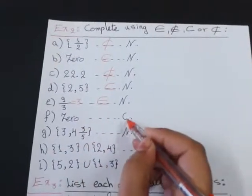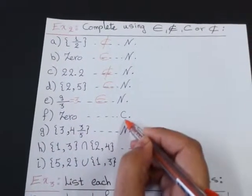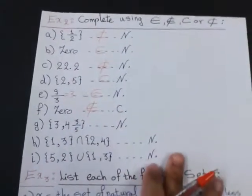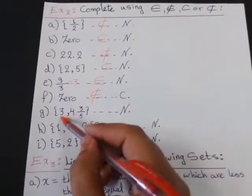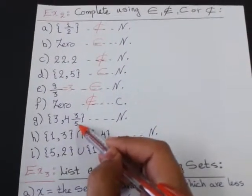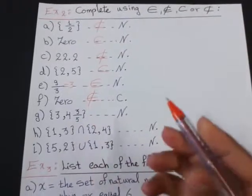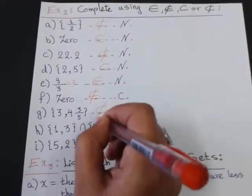0 to C. 0 element of counting numbers? No. Not element. Because the smallest counting number is 1. 3 and 4 and 3 fifths. We have a mixed number here. It has a fraction. So, this is not subset.